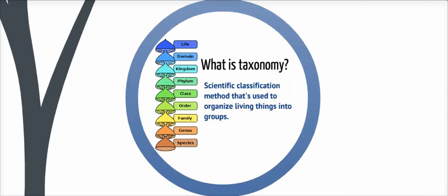Just to briefly review, what is taxonomy? Essentially, it's the classification method that's used to organize living things into groups. A way to remember the order from most to least inclusive is King Phil called Oscar for good soup.